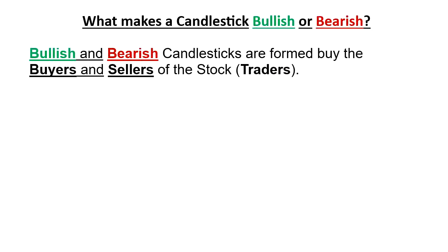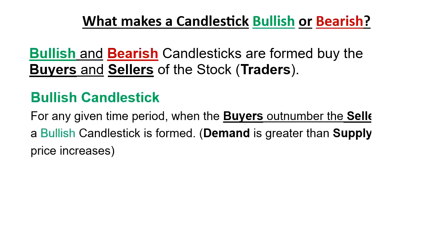Now what makes a candlestick bullish or bearish? We know that for a bullish candlestick the price is increasing and for a bearish candlestick the price is decreasing. But what causes the price to increase or decrease? It's the buyers and the sellers of the stock. Bullish and bearish candlesticks are formed by the buyers and the sellers — basically the traders of the stock. When the buyers outnumber the sellers, a bullish candlestick is formed because demand is greater than supply and prices increase.